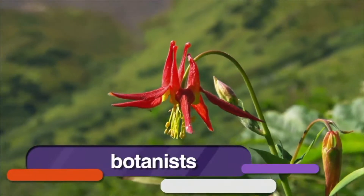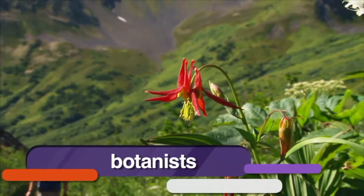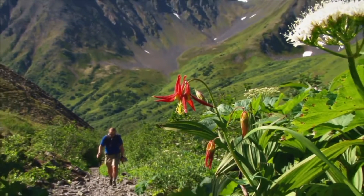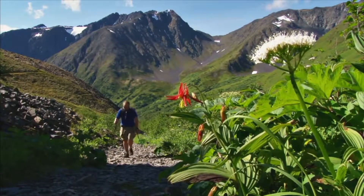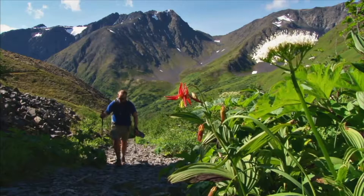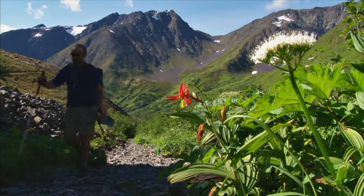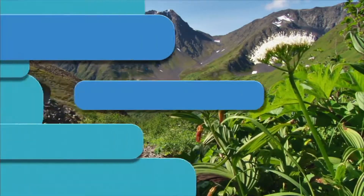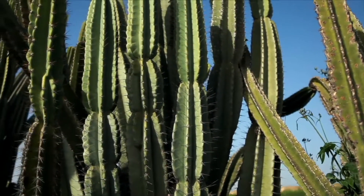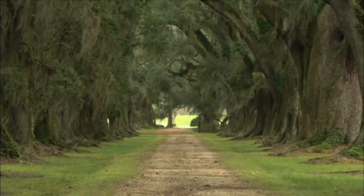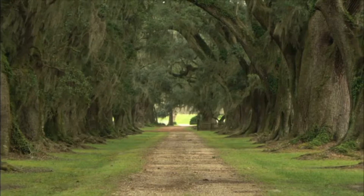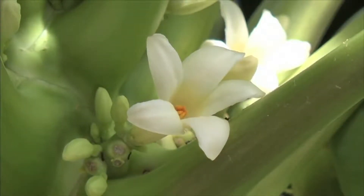Botanists are scientists who study plants. They have named and described over 300,000 different kinds of plants, and they estimate that there are still many more kinds of plants they haven't discovered yet. Plants do come in all shapes and sizes, but they have some common features. First, most plants are green. Most plants are attached to the ground, and all plants make their own food.